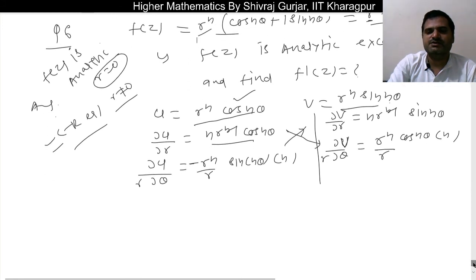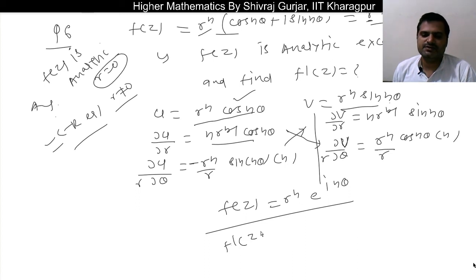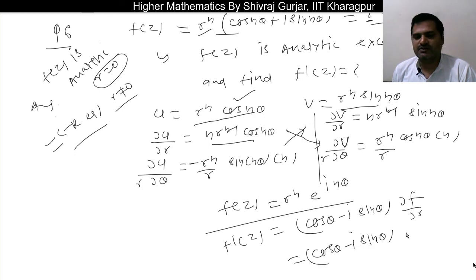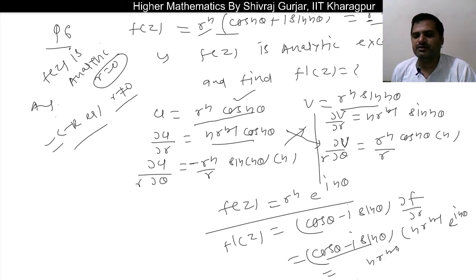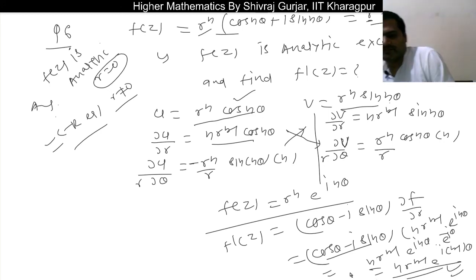Now we are asked to find f'(z). We use f'(z) = e^(−iθ) · ∂f/∂r, which equals (cos θ − i sin θ) · ∂f/∂r. Here ∂f/∂r = n · r^(n−1) · e^(inθ). So f'(z) = e^(−iθ) · n r^(n−1) e^(inθ) = n r^(n−1) e^(i(n−1)θ).